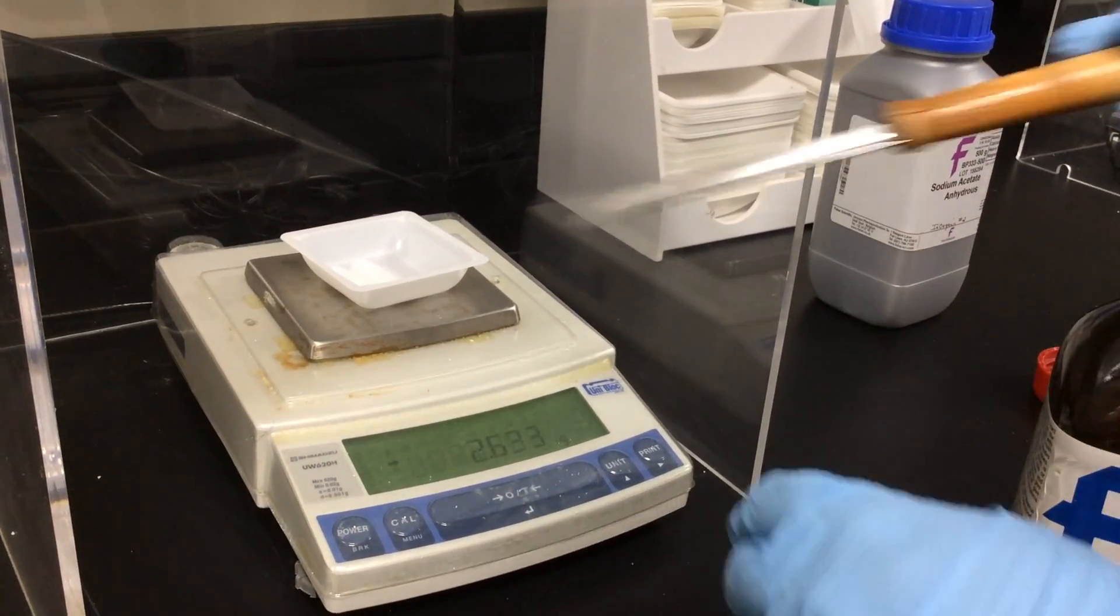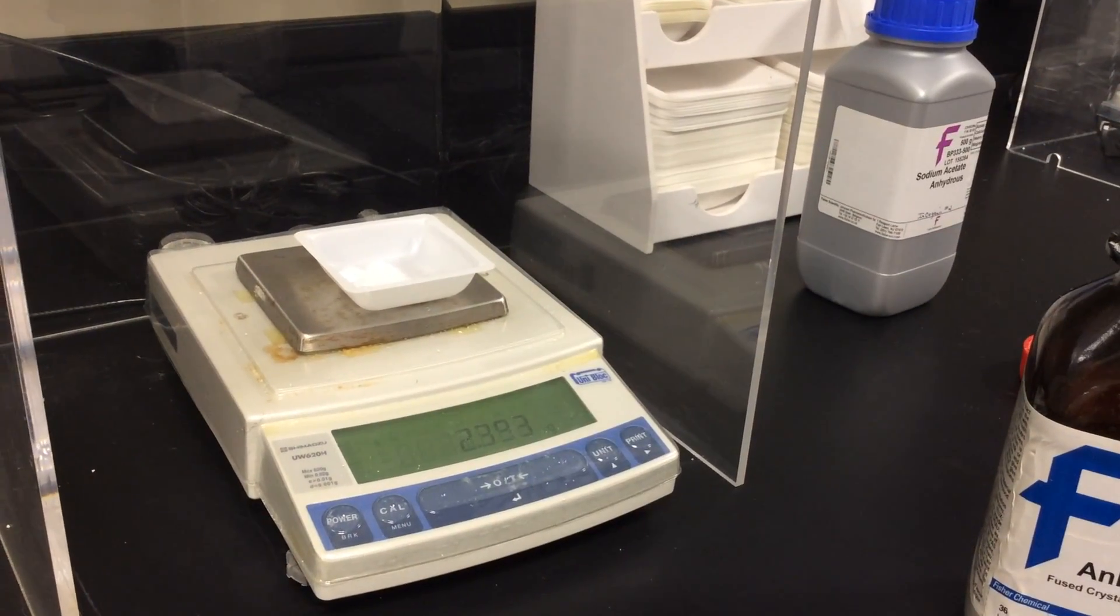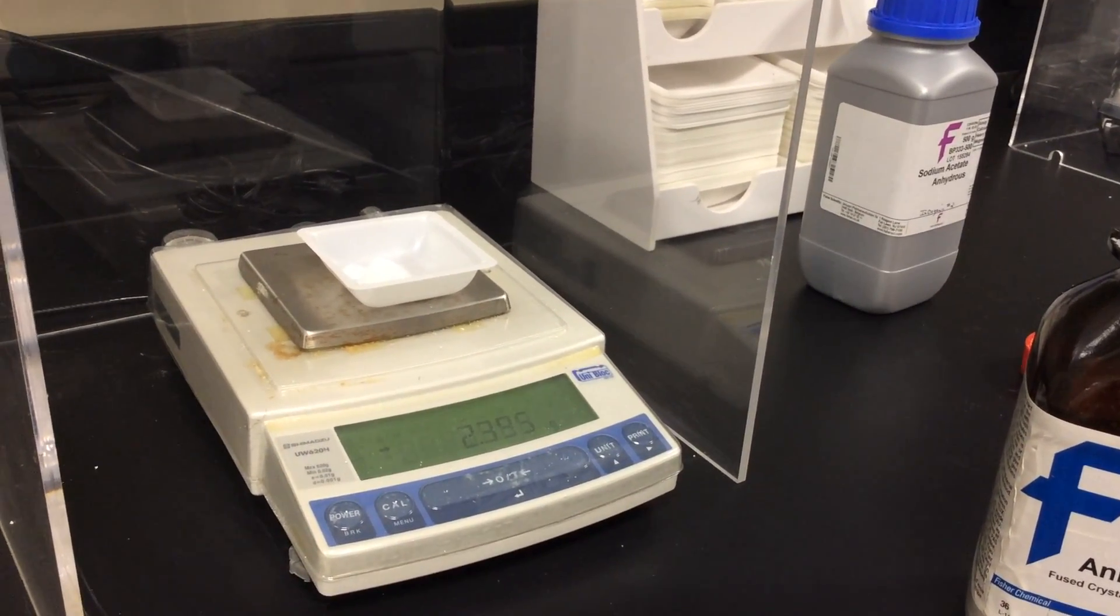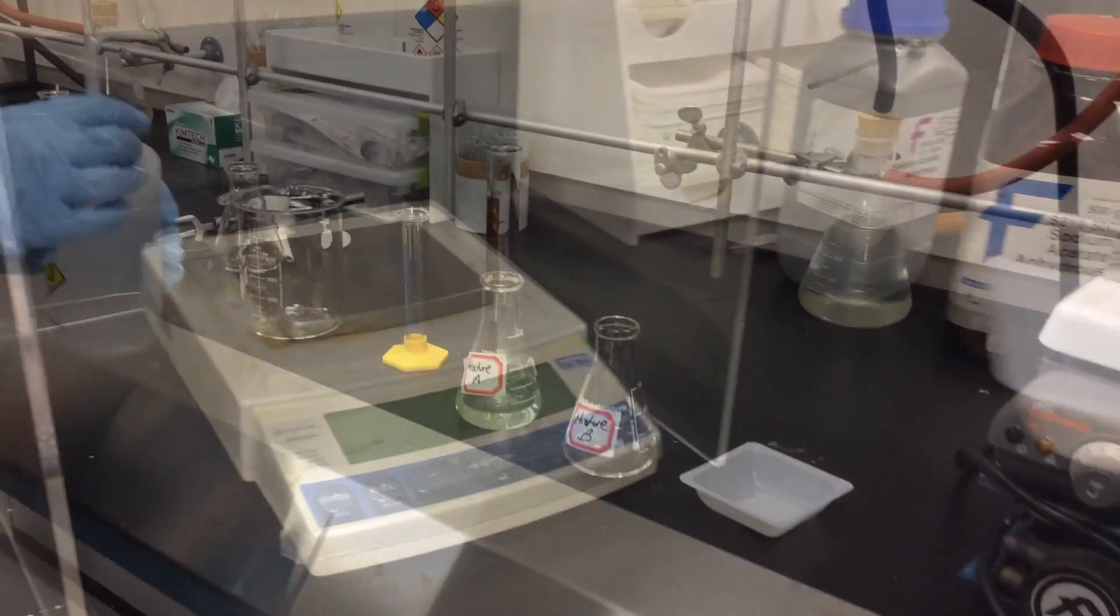If you have too much, like here's 2.6, you can take a little bit off. We finally get 2.3945 grams, and that will work. Then we're going to take it over to our hood.